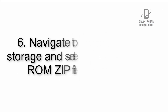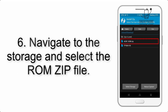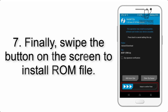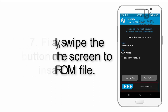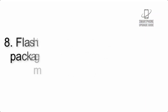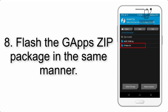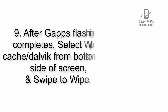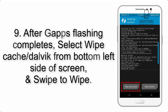Step 5: Go back to the recovery main screen and tap on the Install button. Step 6: Navigate to the storage and select the ROM zip file. Step 7: Finally, swipe the button on the screen to install the ROM file.